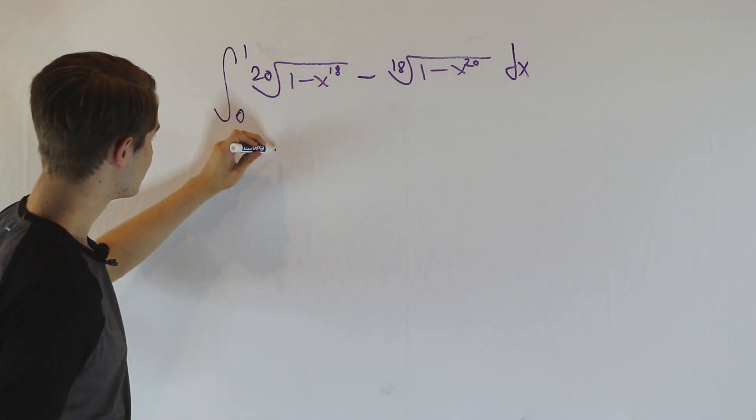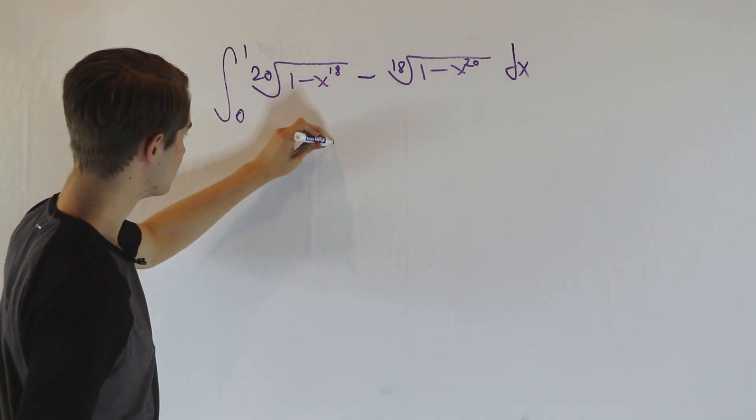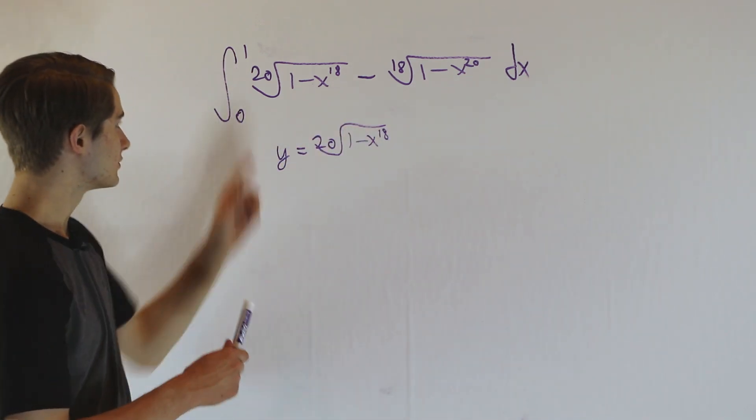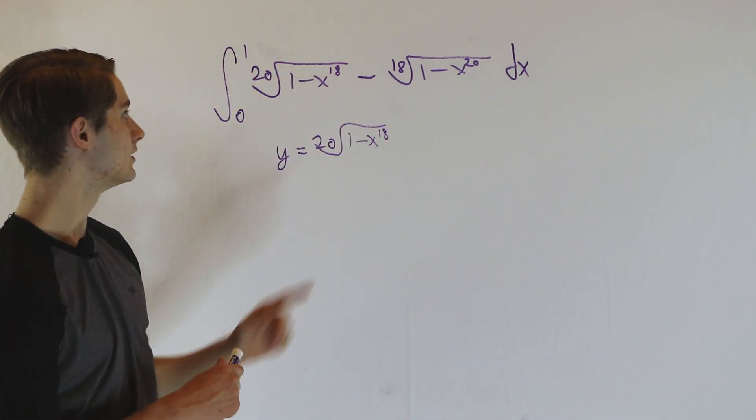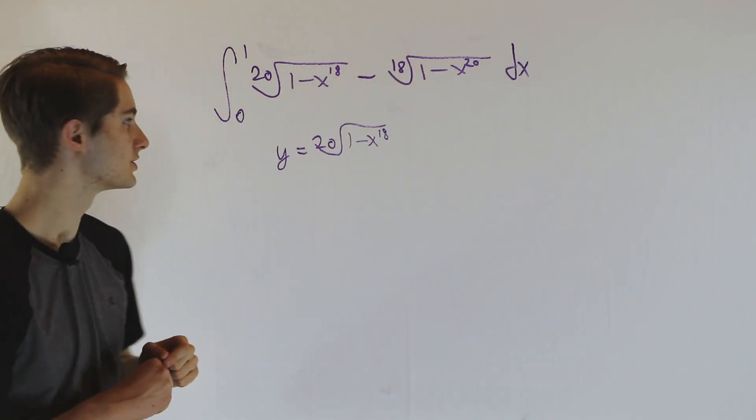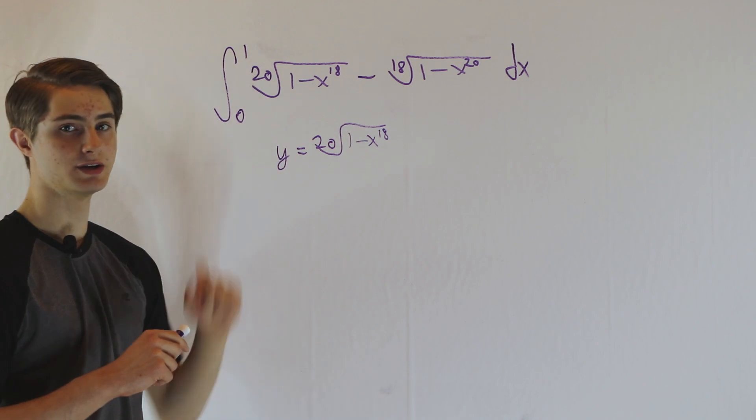Let's look at the function y equals the 20th root of 1 minus x to the 18th. We see there's a 20 and 18 here, and in the other term it's the exact same function but the 18 and 20 are switched, which suggests there's some relationship here.